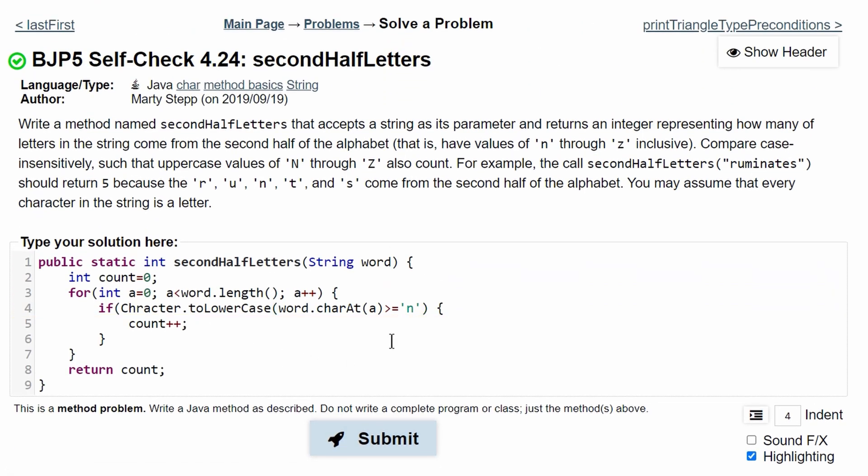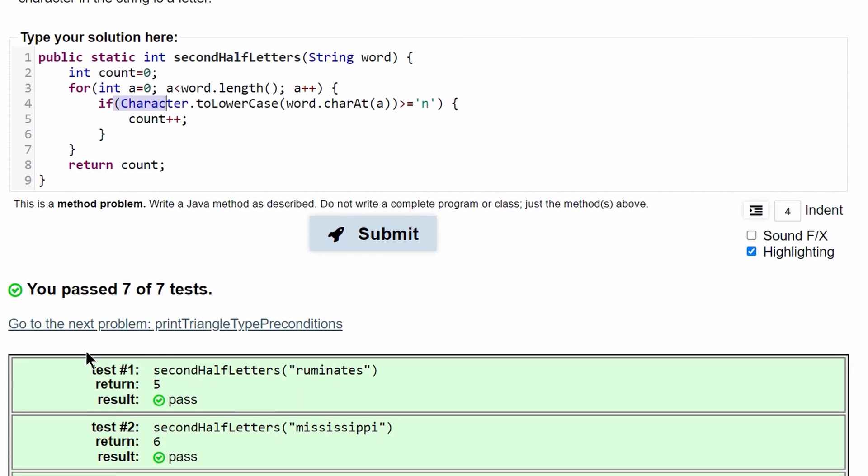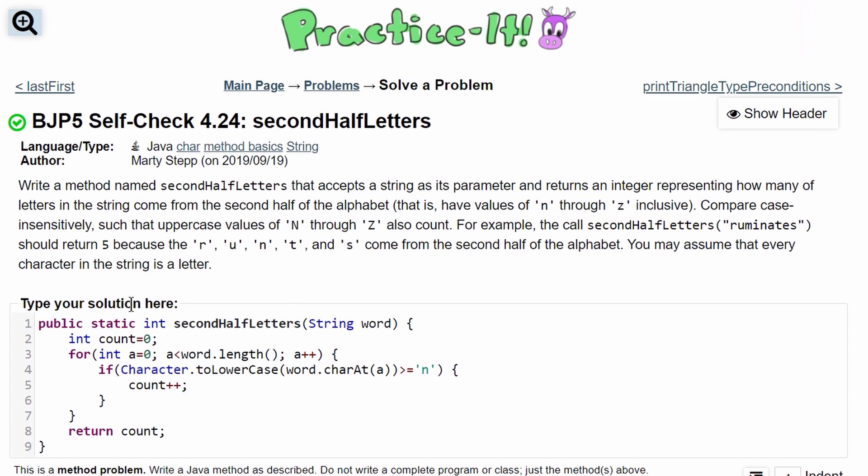So another error that I have is that I did not close off my parenthesis for the Character.toLowerCase and the word.charAt. I didn't add this parenthesis right here when I should have. And also I spelled character wrong. It should be C-H-A-R-A-C-T-E-R. If I submit this with everything spelled and placed correctly, we have passed all seven tests. So this is the code for Practice-It self check 4.24.